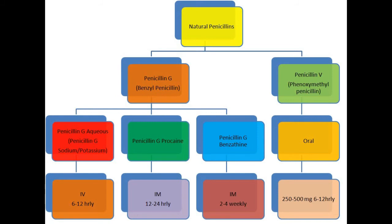Penicillin V, the oral preparation, is usually given in a dose of 250 to 500 milligrams every 6 to 12 hours. In summary, natural penicillin includes penicillin G and penicillin V. Penicillin G is given intravenously or intramuscularly in three preparations — aqueous, procaine, and benzathine — where benzathine and procaine are longer acting and given intramuscularly, while the aqueous form is short acting and given intravenously.